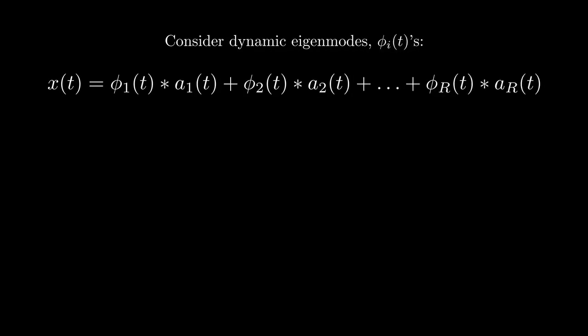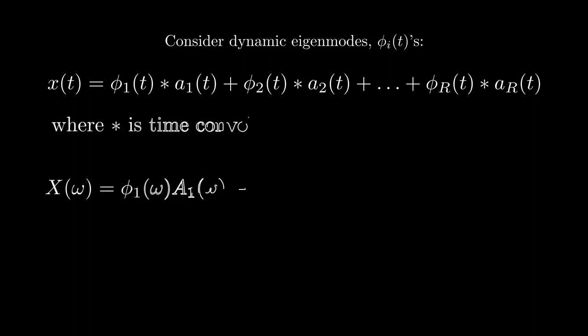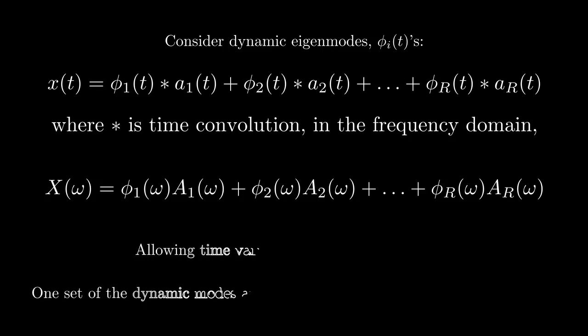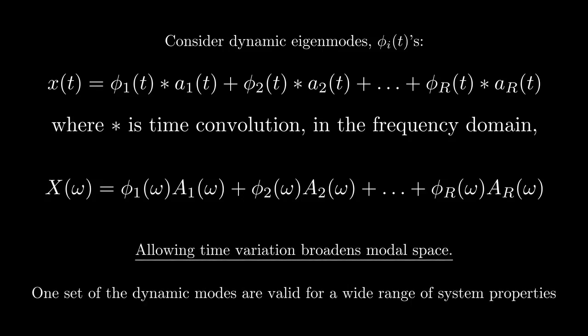Consider now the dynamic eigenmodes, which vary as a function of time. To express a system response in the time domain, we will need to take the convolution between the dynamic eigenmodes and the generalized coordinates. In the frequency domain, this becomes multiplication and a standard superposition. So here we are leveraging the memory effect of the time convolution to account for the parameter variations.